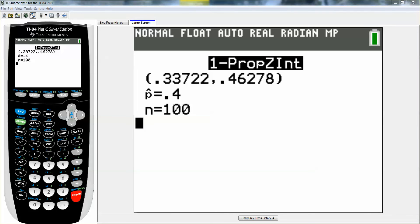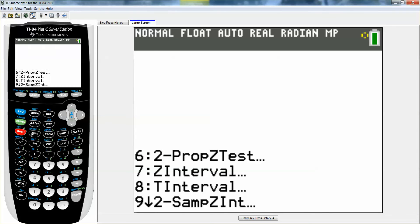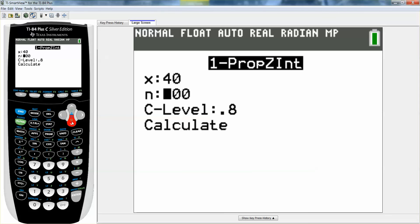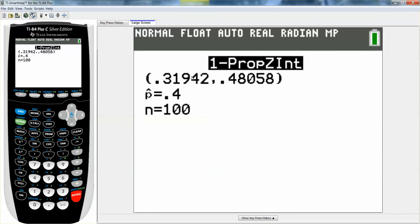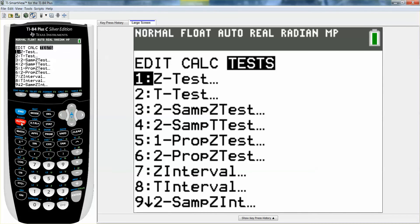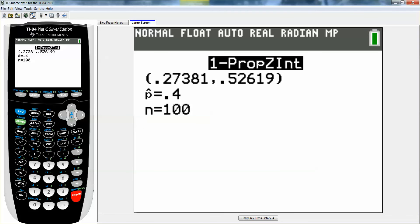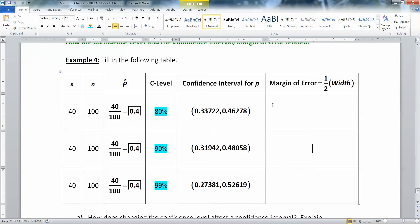And there it finds the interval for me. And now we just do it again and again. So you go back to stat, go to tests, alpha a, leave it 40 and 100, but change it to 0.90. Calculate. And we get that interval. And then do it again. Alpha a and make it 0.99. And we get that interval. So I'm going to go type those intervals up.